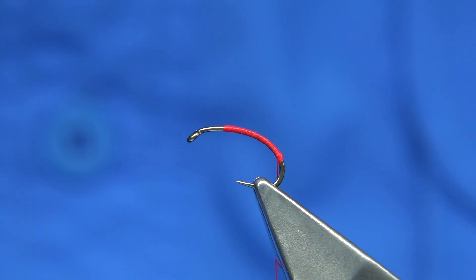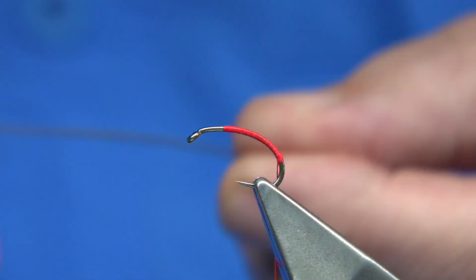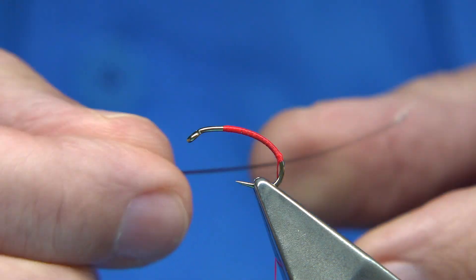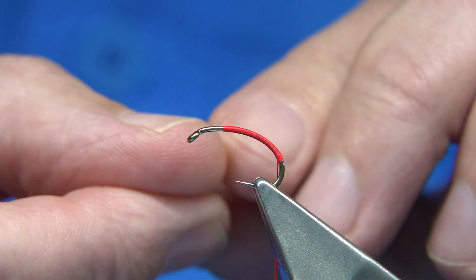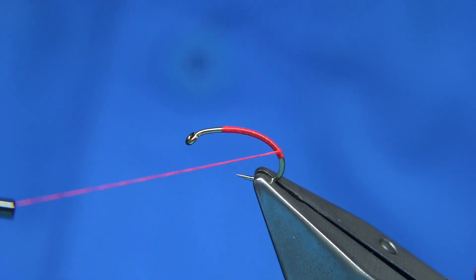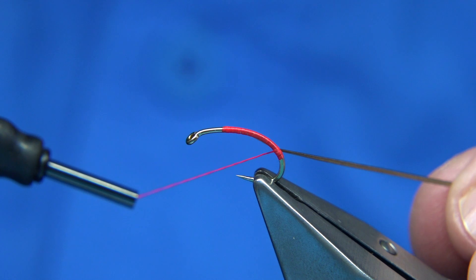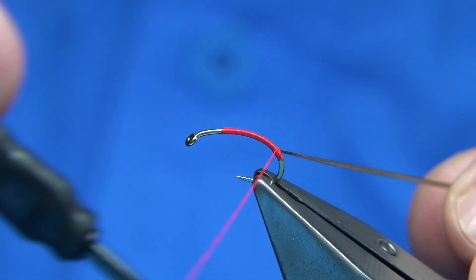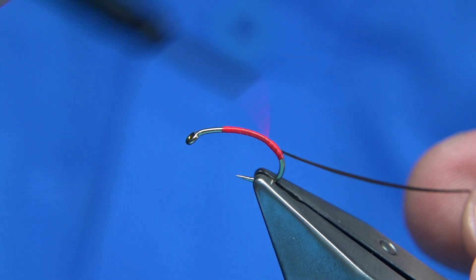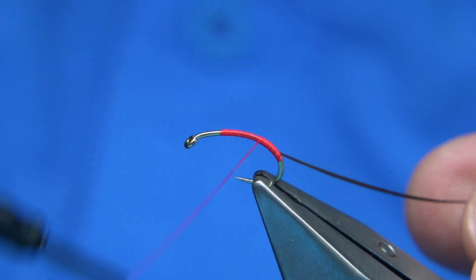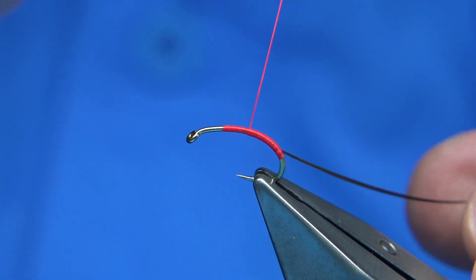For the body I'm using a stripped peacock quill. It's just a natural quill which I've already stripped away. I'm going to catch this on and wind it up to the fine tapered tip and then just work my way up. Now you could space out the rib on this one if you wanted.